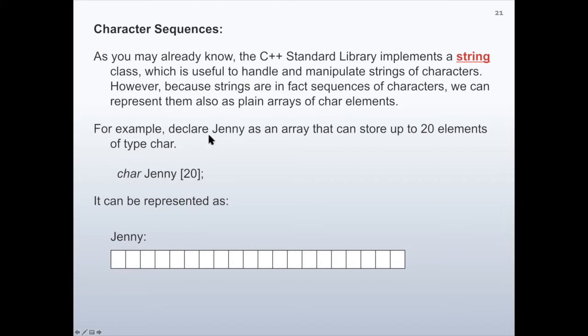For example, declare Jenny as an array that can store up to 20 elements of type character. Here Jenny is declared having 20 elements as a character array. It can be represented as Jenny is the pointer to this array and here we have 20 entries. Each entry can store a character.